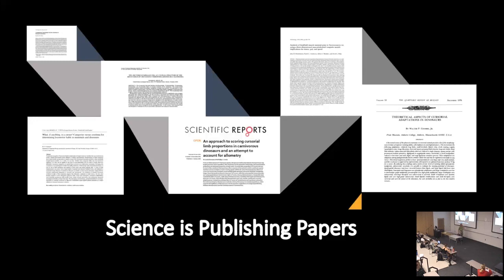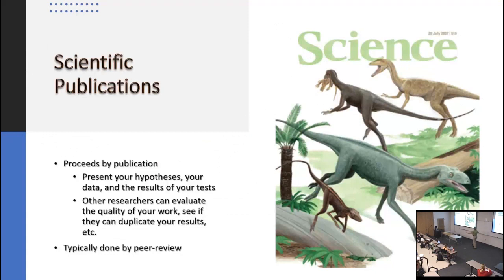These are papers relevant to aspects of the running ability of various dinosaurs. Science proceeds by publication, and in a publication you present your hypotheses, your data, and the results of your test. The reason we do that is mostly so that other researchers can look at it, evaluate your work, and see if they can duplicate your results. It serves as a record of work done, and hopefully science advances as we add analysis by analysis, observation by observation, to the corpus of data.